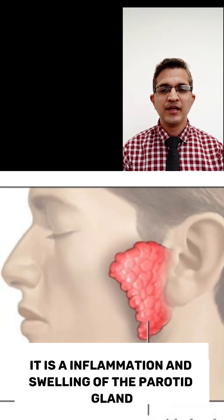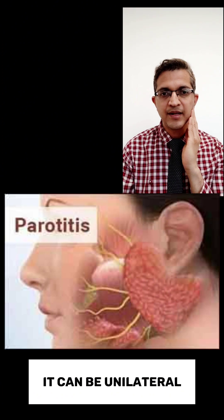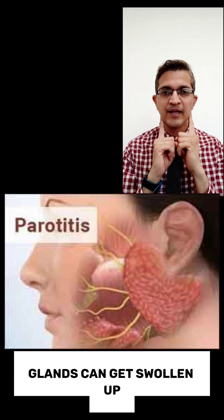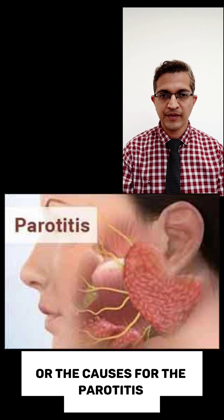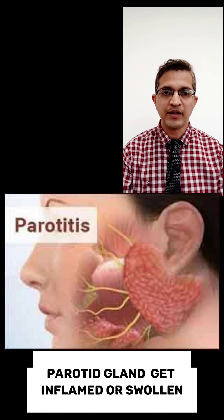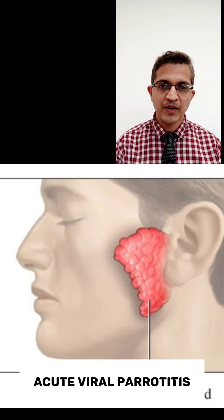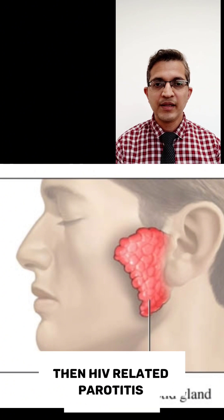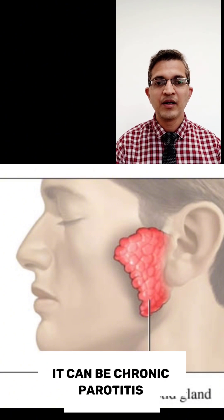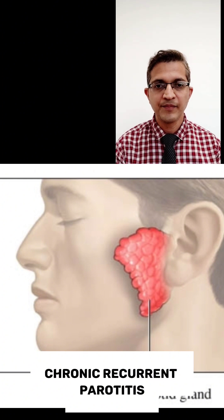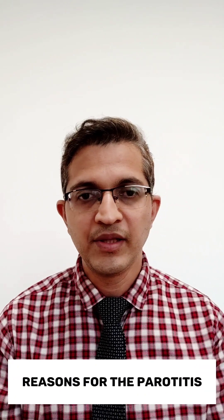What is acute parotitis? It is an inflammation and swelling of the parotid gland. It can be unilateral — that is one side — or bilateral, meaning both side glands can get swollen. The different causes for the parotid gland to get inflamed include acute bacterial parotitis, acute viral parotitis (also called mumps), HIV-related parotitis, tuberculosis, chronic parotitis, chronic recurrent parotitis, and autoimmune parotitis.